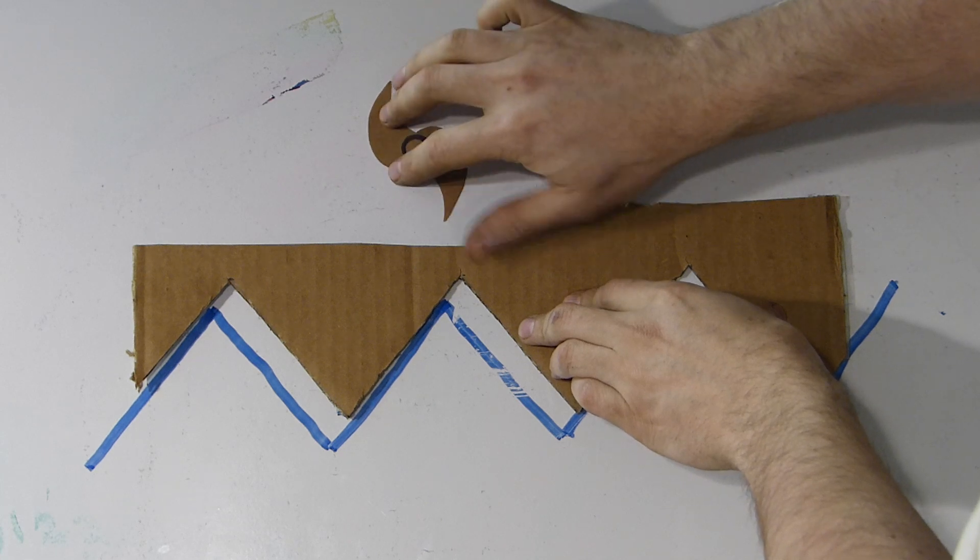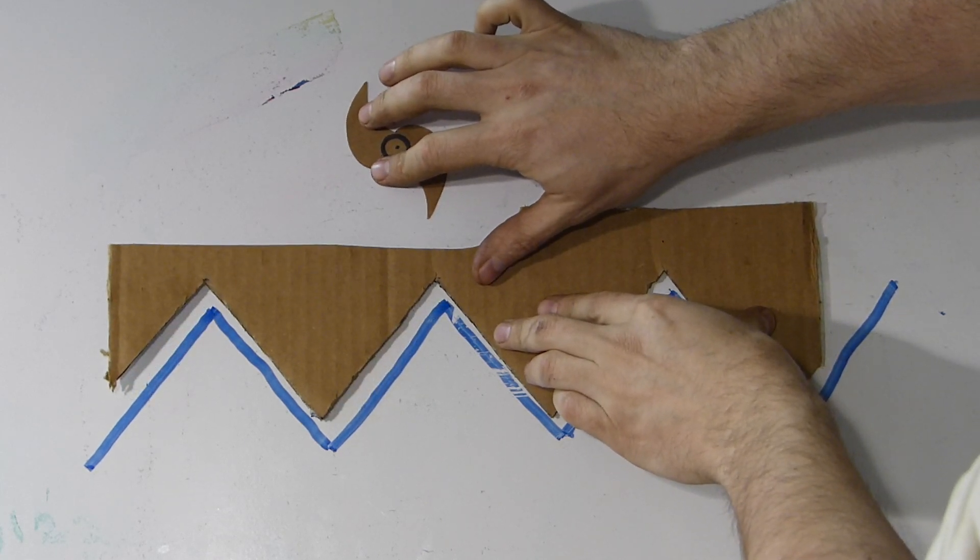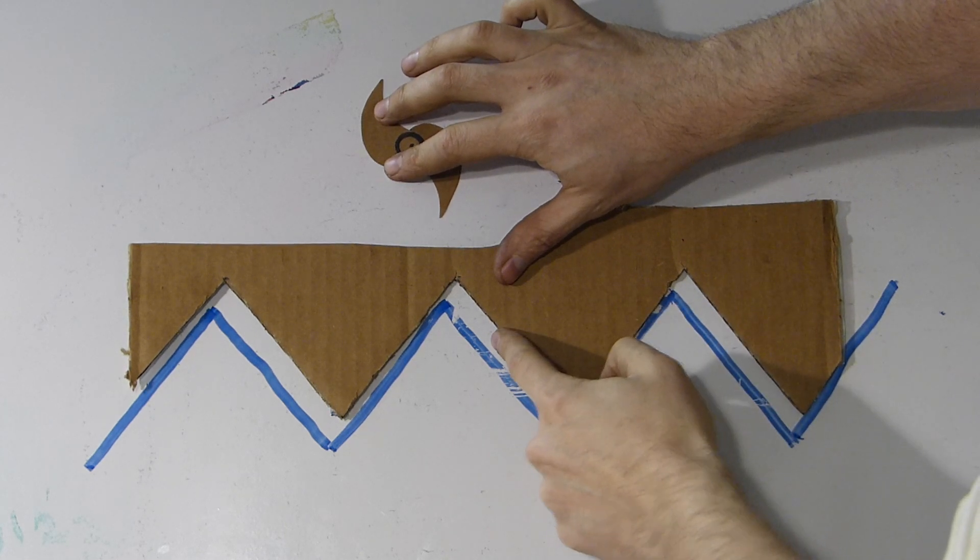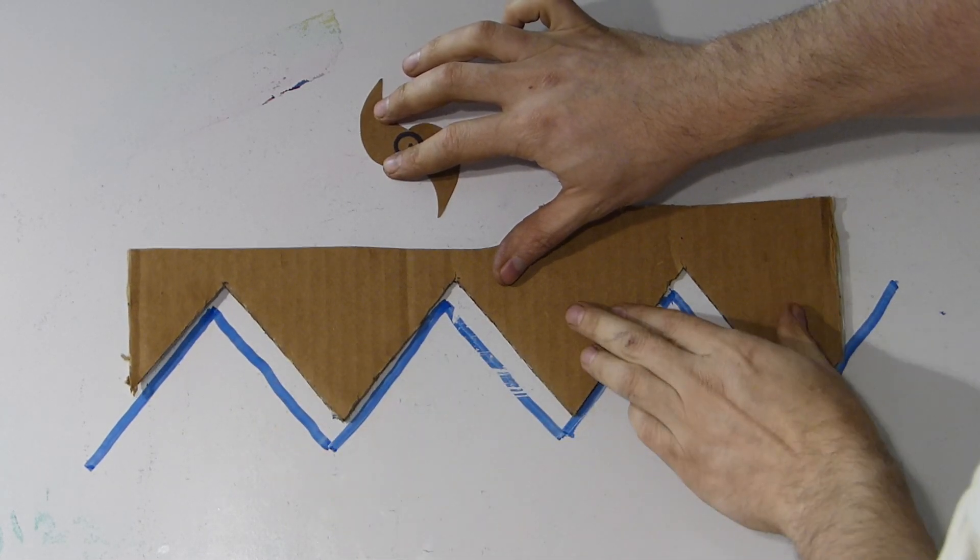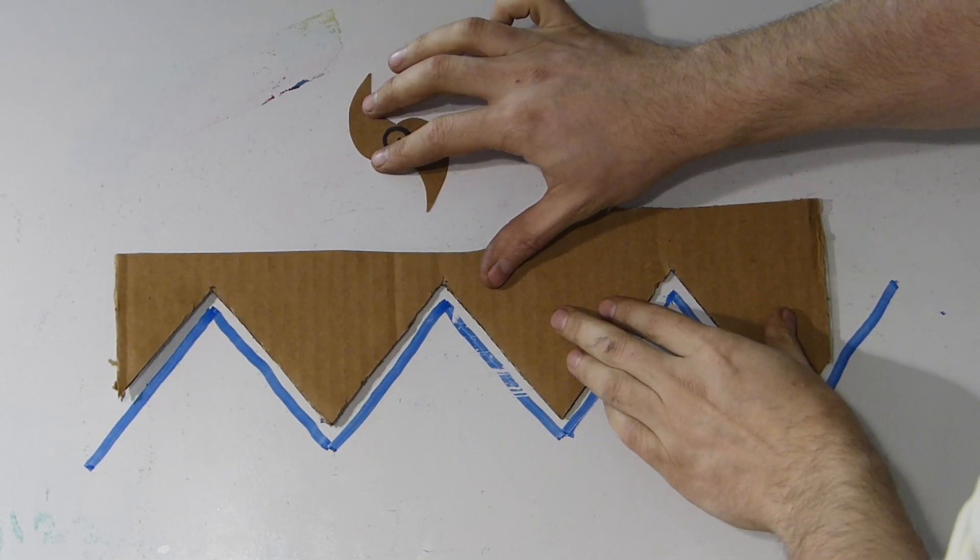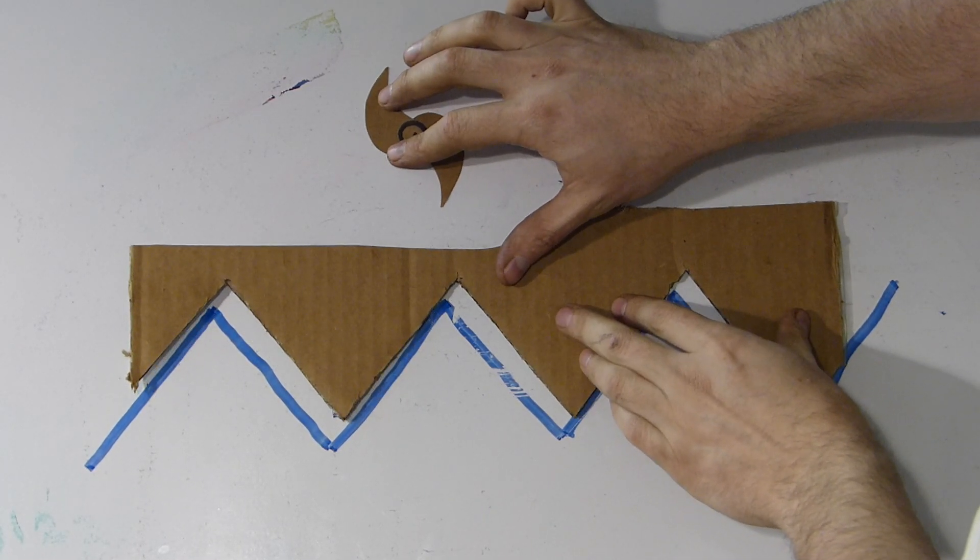It's going to want to yank this work piece forward in the direction of travel, and because we've got this play right here, it's able to do that, which means now we've introduced some instability to our work.